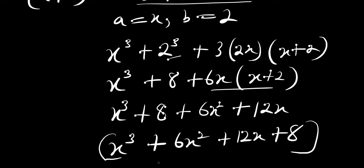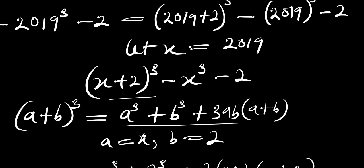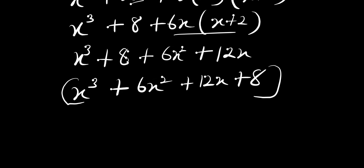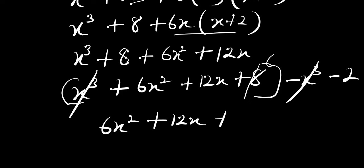Remember we still have minus x³ minus 2, so let's bring those terms here: minus x³ minus 2. The x³ terms cancel each other, and 8 minus 2 gives 6. So we are left with 6x² plus 12x plus 6.